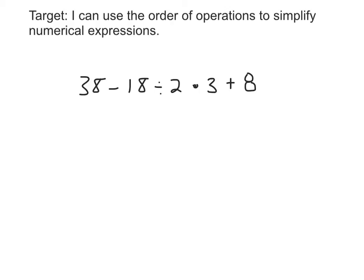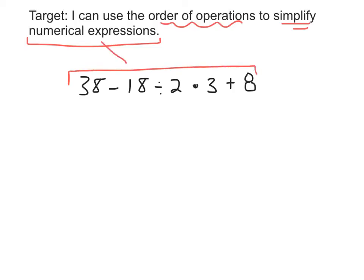In this lesson, the target states: I can use the order of operations to simplify numerical expressions. Let's break that down a little bit to better understand what all those things mean. First thing I can point out is that this is an example of a numerical expression. It's a numerical expression because it's made up of numbers and operations. It has lots of different kinds of operations in it, so we're going to have to simplify it carefully, using the correct order of operations.